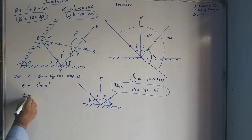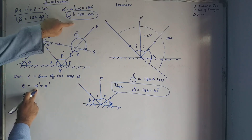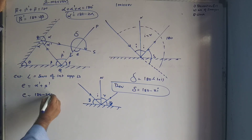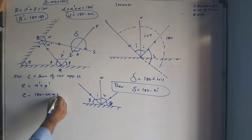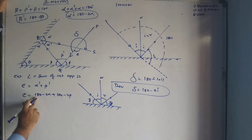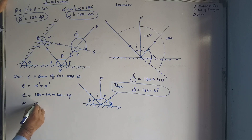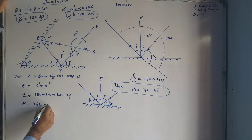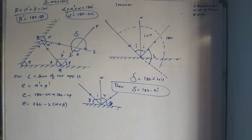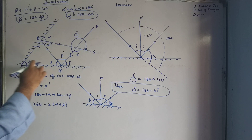So e equals alpha dash plus beta dash. Substituting: e equals (180 minus 2 alpha) plus (180 minus 2 beta), which gives e equals 360 minus 2(alpha plus beta).